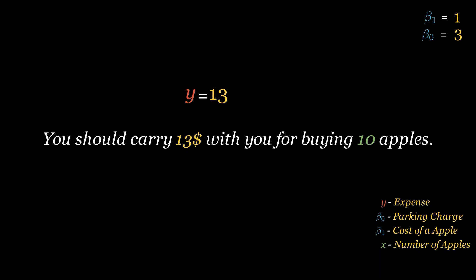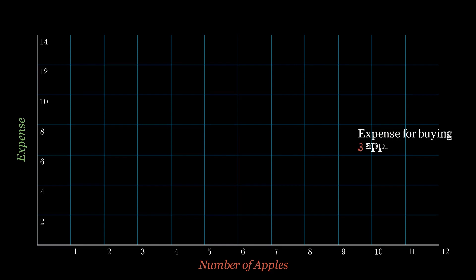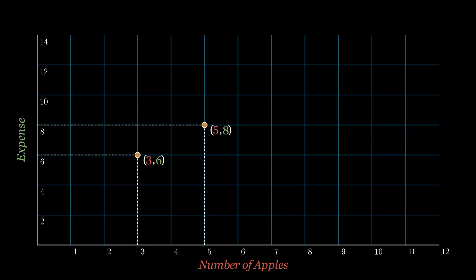You can also represent and solve it using a graph, where the y-axis represents expenses and the x-axis represents apples. As the parking charges are fixed, we don't need to keep it on any axis. The question states the expenses for buying three apples is six dollars, so the x-axis value will be three and the y value will be six.